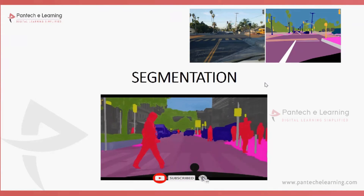As you can see in the image, how the real image and the segmented image differ. Here you can detect a person and segment that particular person into a different color. These types of implementations are mostly used for AI-based vehicles or AI-based recognition purposes.